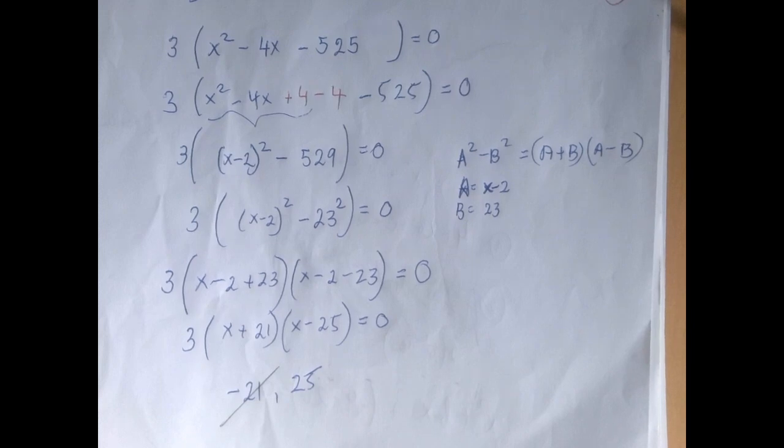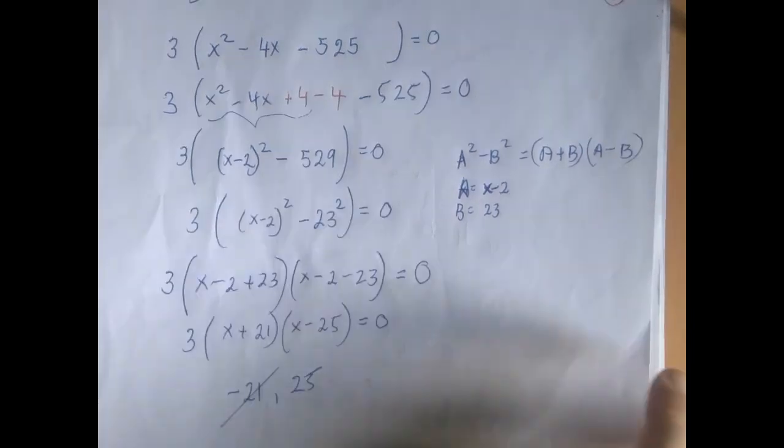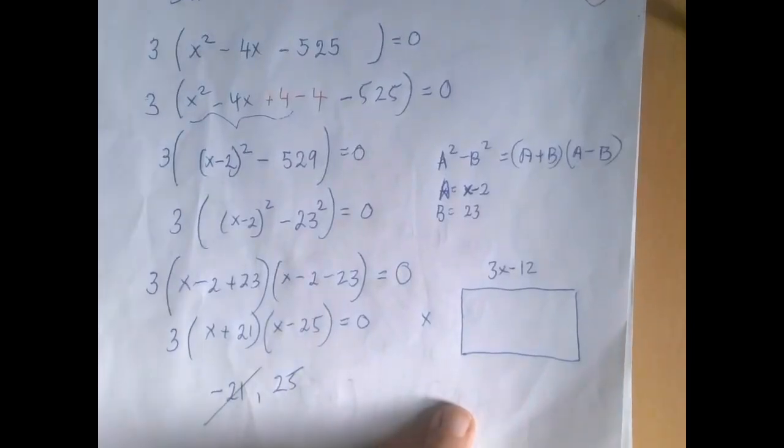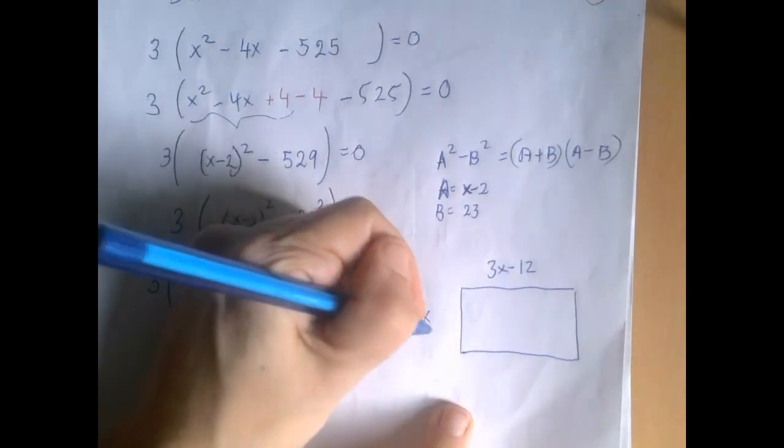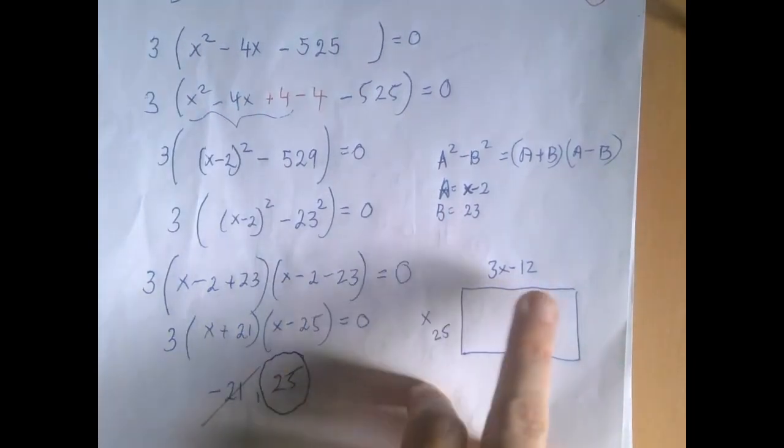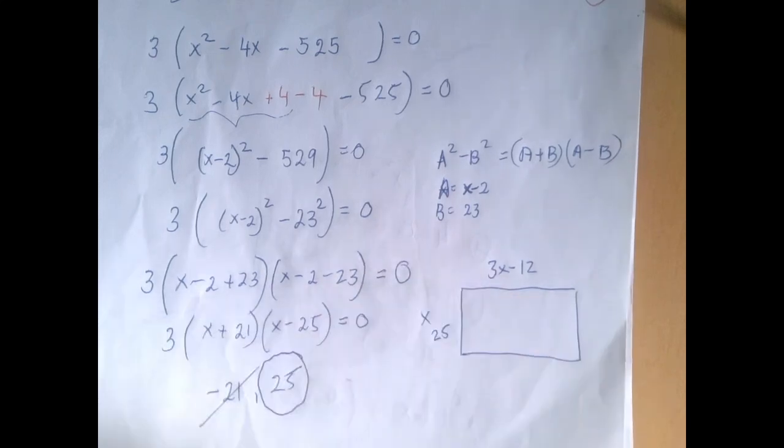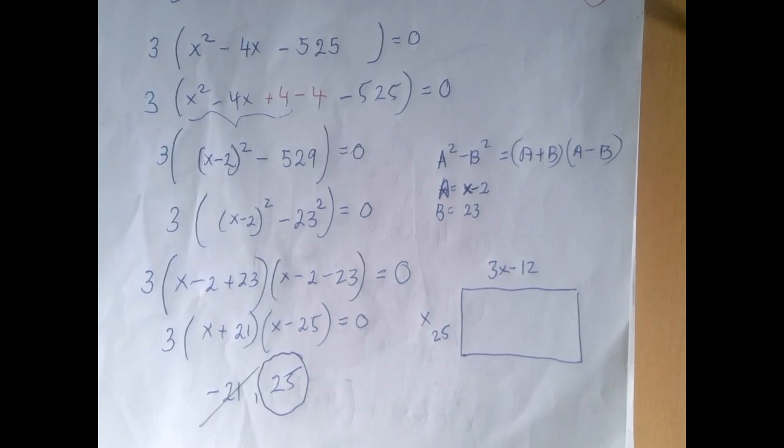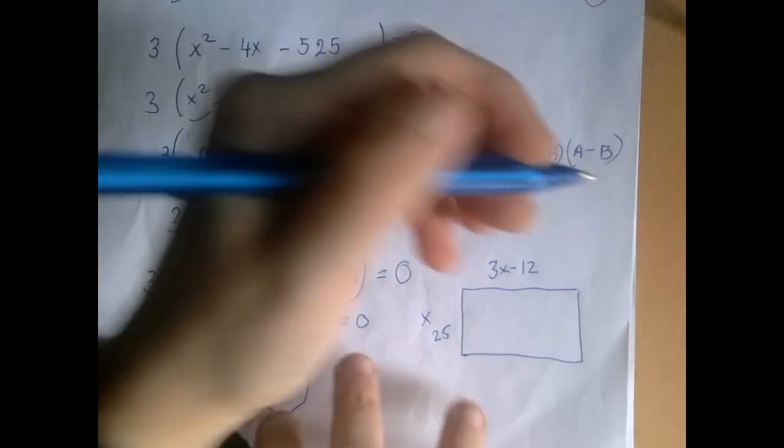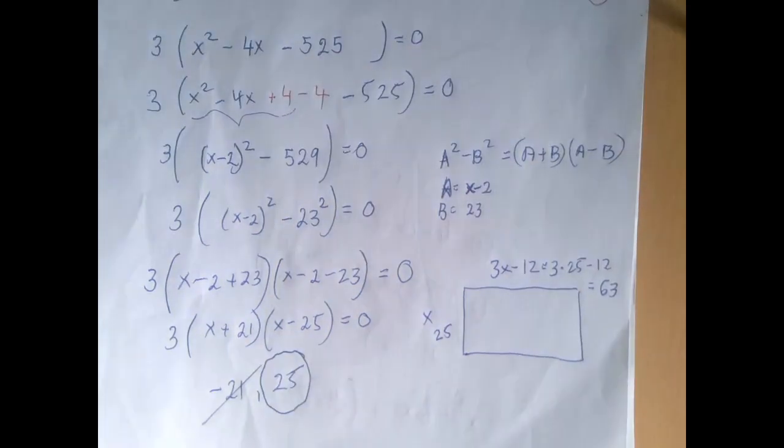Sometimes they both work. Now, in this case, the negative one cannot. So if x is 25, then this side of the rectangle is 25 and 3 times 25 minus 12, 3 times 25 is 75. 75 minus 12 is 63.